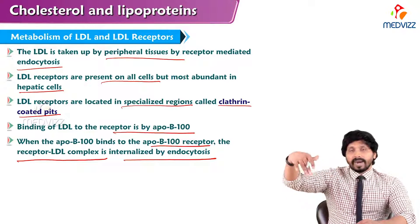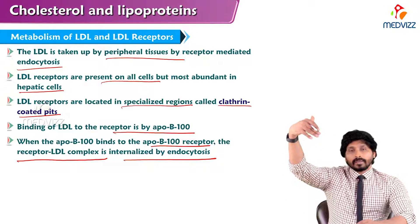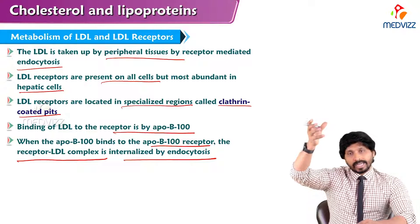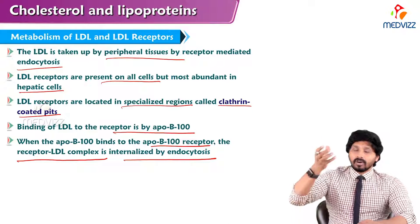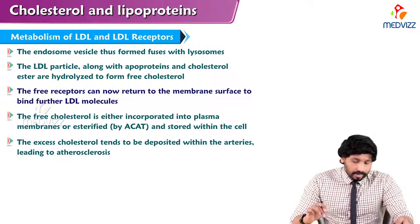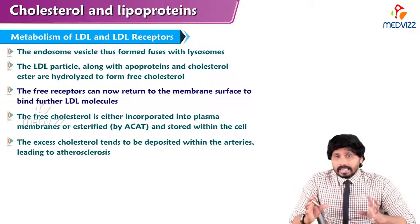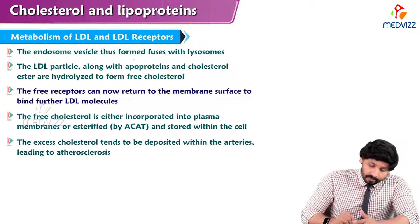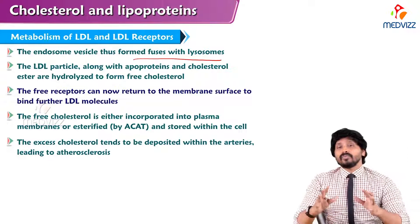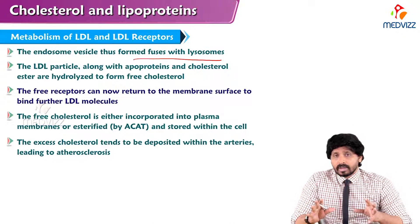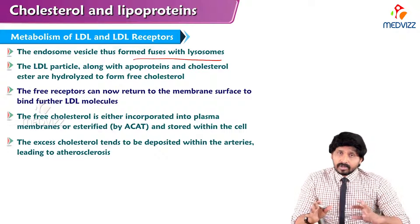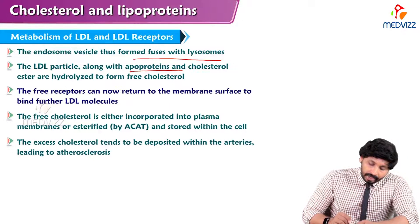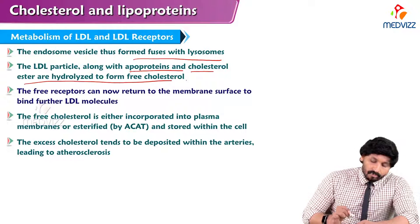The moment it binds on the receptor site, that clathrin-coated pit allows the target tissue to take up the LDL by the process of endocytosis. With the formation of the endosome, the endosome vesicle thus formed fuses with lysosomes. Inside the cell there are many subcellular organelles, and one of them is the lysosome, where the LDL particle along with apoprotein and cholesterol is hydrolyzed to form free cholesterol.